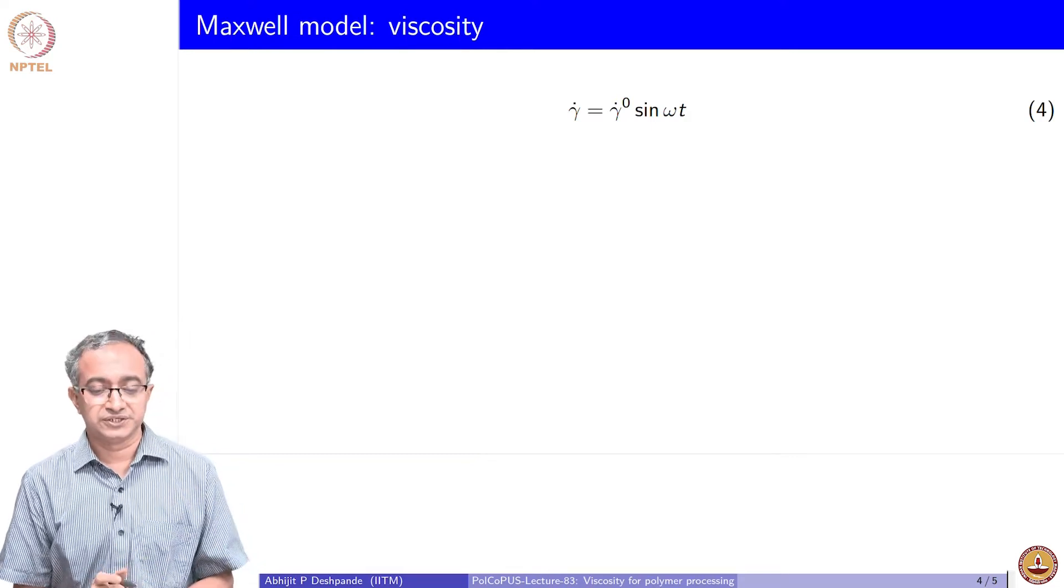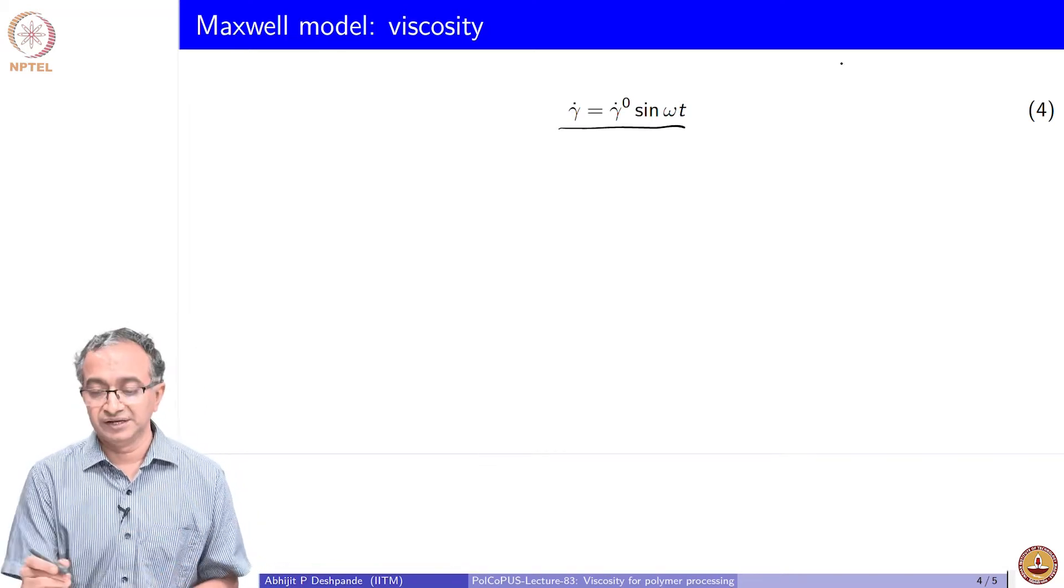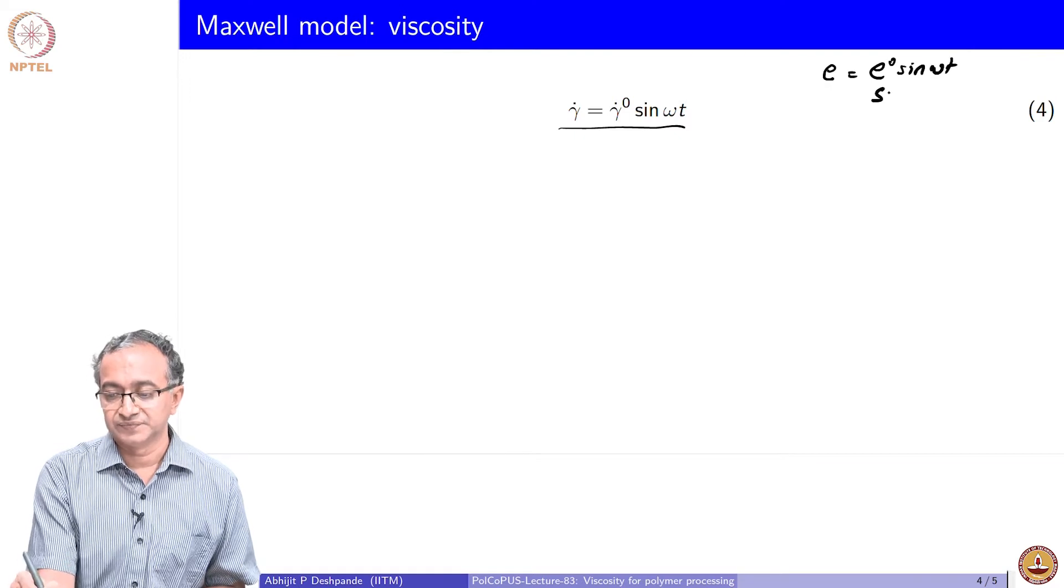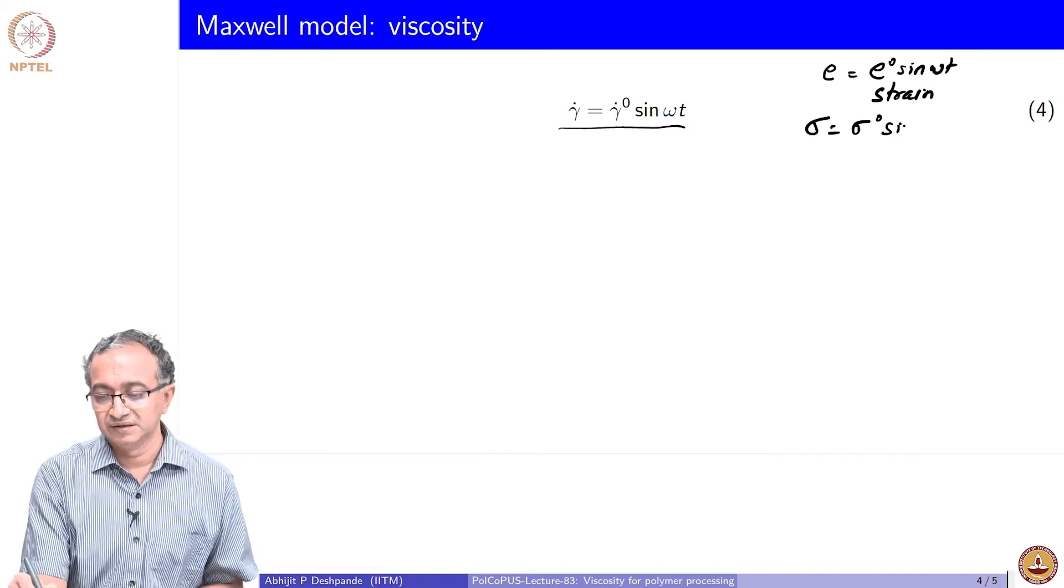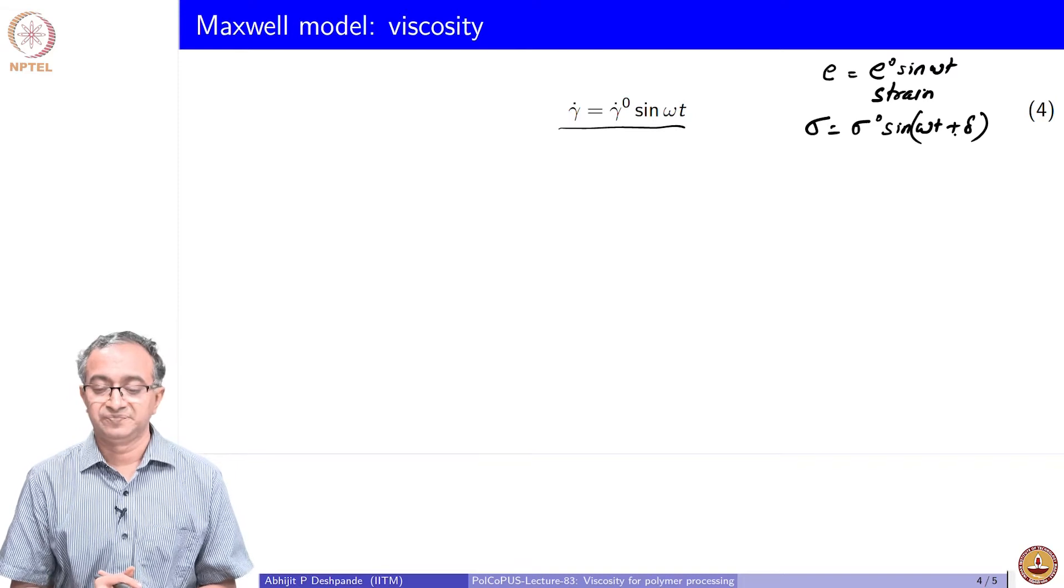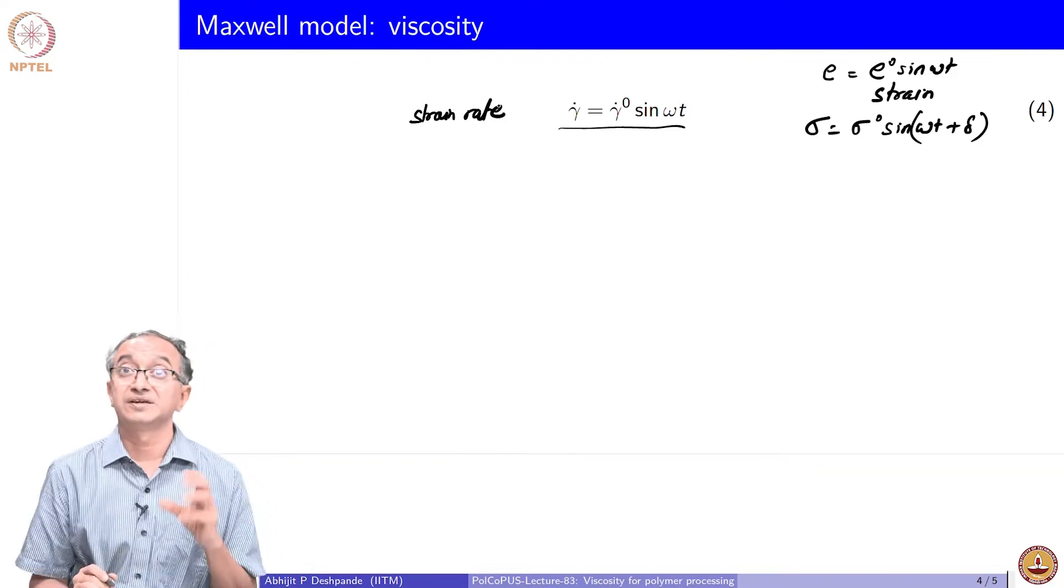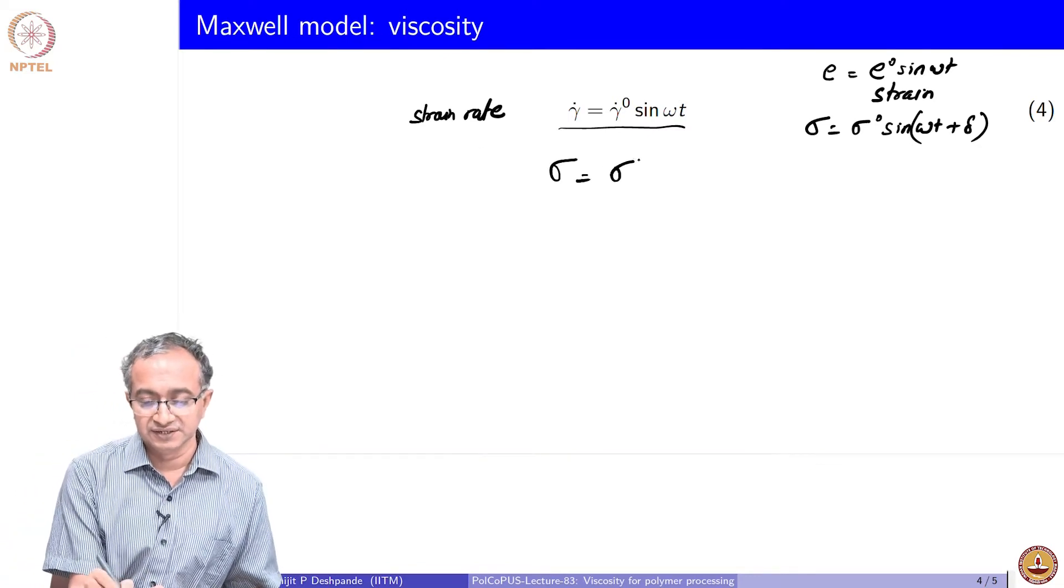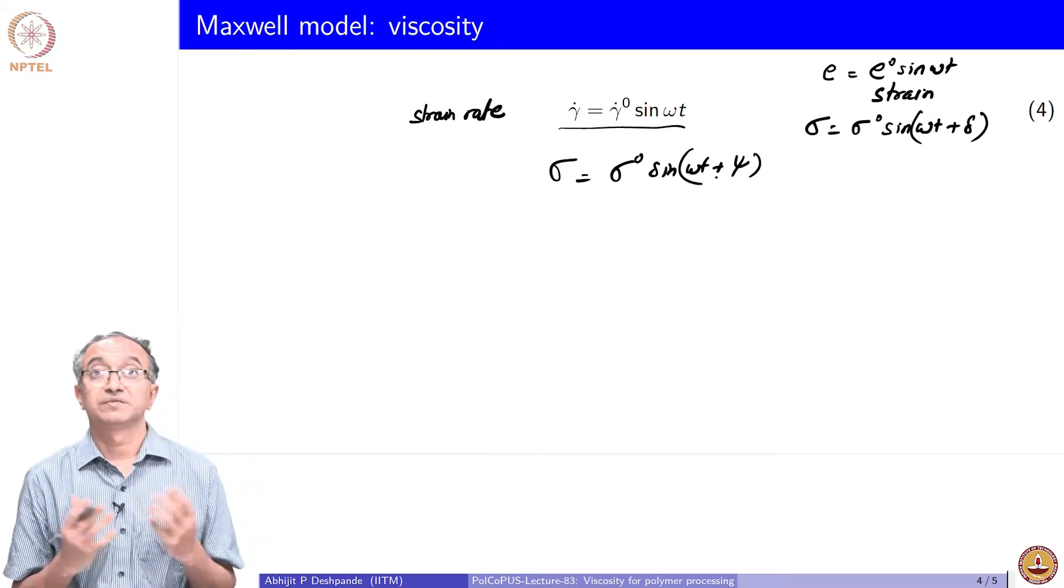Let us look at dynamic viscosity now. Dynamic viscosity is obtained by subjecting the material to a sinusoidal strain rate. If you recall earlier, we had talked about subjecting the material to a sinusoidal strain and then we looked at the stress generated in the material. We also realized for viscoelastic material there will be a phase lag. Now similarly, we are subjecting the material to a strain rate because our interest is in calculating viscosity and viscosity is a parameter which relates stress to strain rate. The result will be again a stress but with a phase angle.